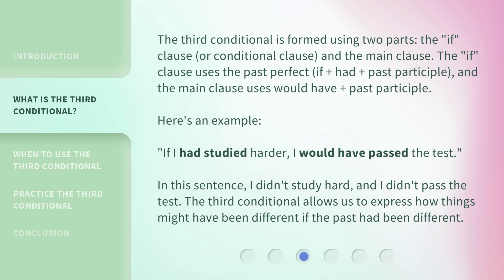Here's an example. If I had studied harder, I would have passed the test. In this sentence, I didn't study hard, and I didn't pass the test. The third conditional allows us to express how things might have been different if the past had been different.